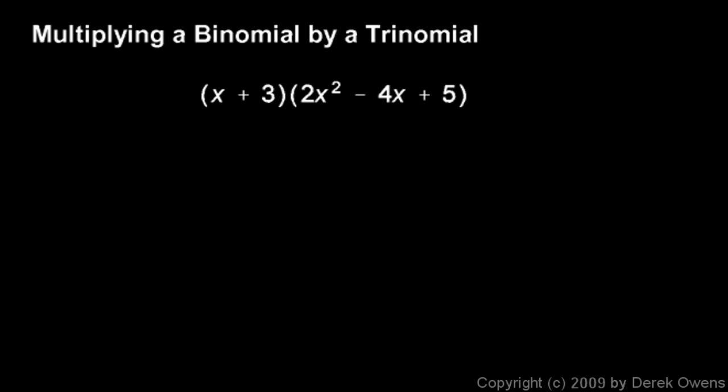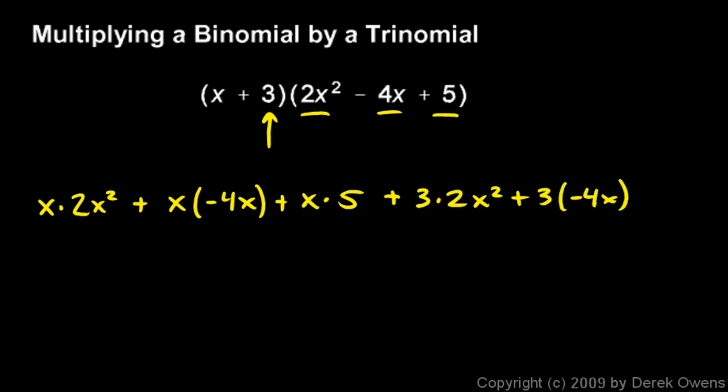So let's work this out. I'm going to start by multiplying the x by each of these three terms. So it's going to be x times 2x squared plus x times negative 4x plus x times 5. And then I'm going to multiply the 3 times each of those terms. So I'll say plus 3 times 2x squared plus 3 times negative 4x plus 3 times 5.